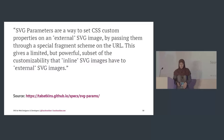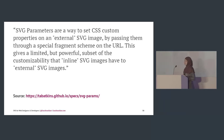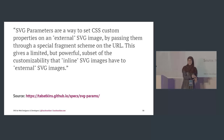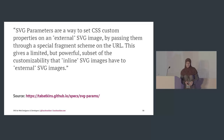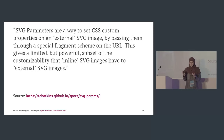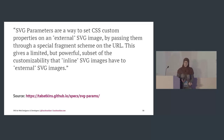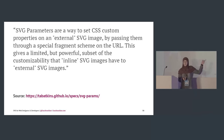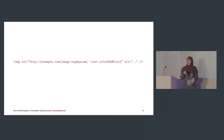There's also something new coming: SVG parameters. This technique using custom variables works if the SVG is inline, but if you have an external SVG and want to specify a variable color for it, it currently doesn't work. SVG parameters are a way to set CSS custom properties on an external SVG — you reference the SVG, add a parameter function at the end, and specify the color. A specification link is provided.